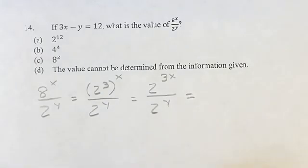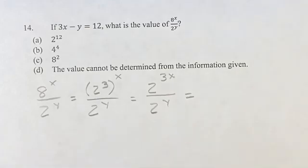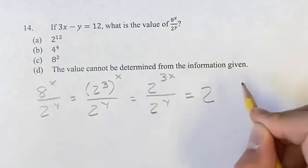We can now use the quotient rule that says when you're dividing two things with the same base, you can subtract their exponents. So this is 2 to the 3x minus y.